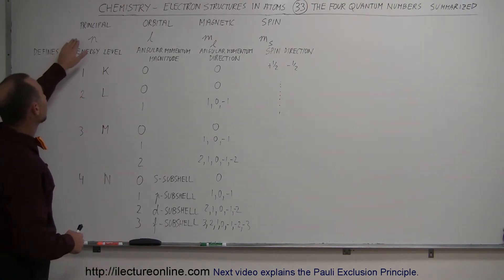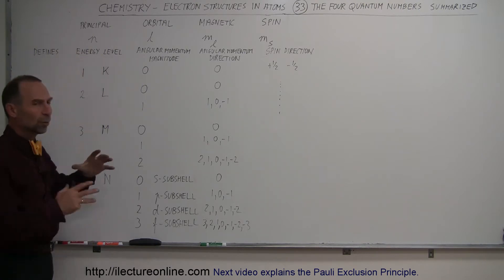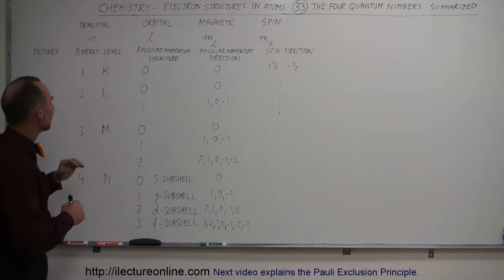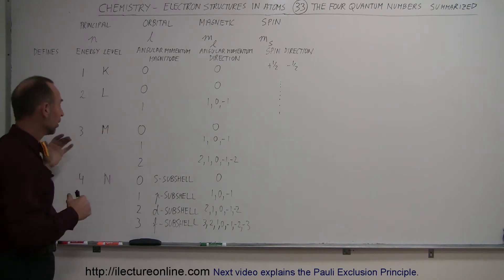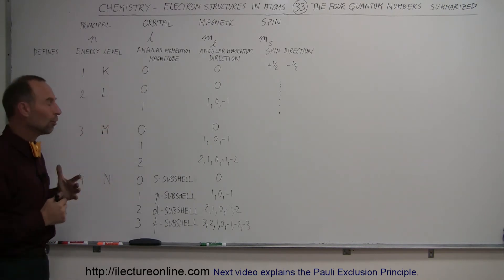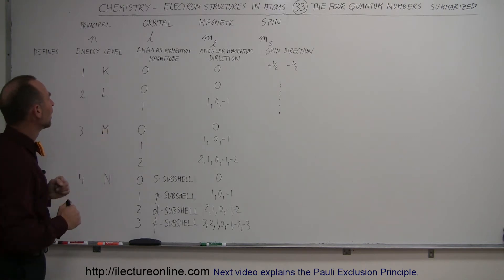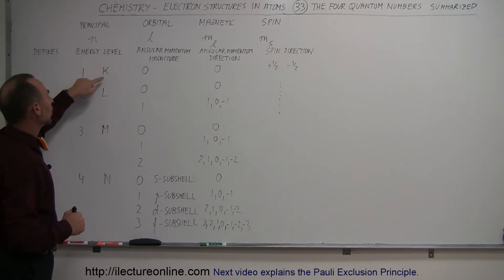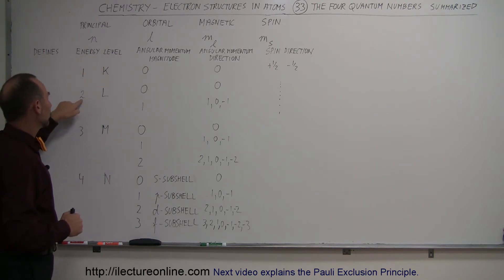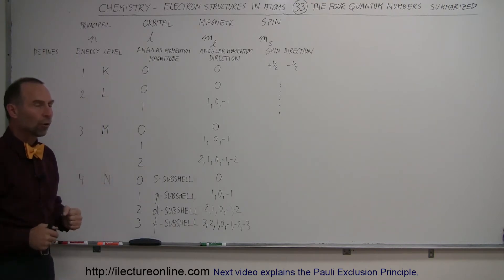The principal quantum number defines the energy levels. The first level, which is the innermost, is the lowest energy level. The second level is above that, which is higher, then the third level above that, which is higher, and so forth. So there are multiple energy levels where the electrons can reside. We also have names for those energy levels: the innermost energy level we call the K shell, the second energy level is the L shell, then we have the M shell, the N shell, and so forth.